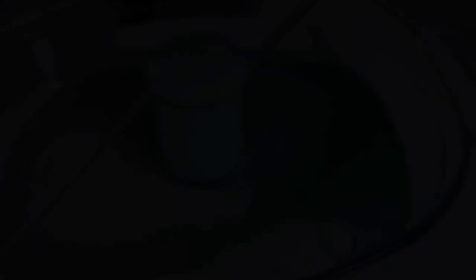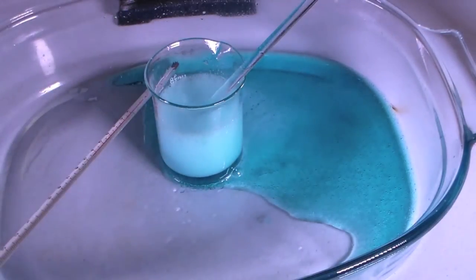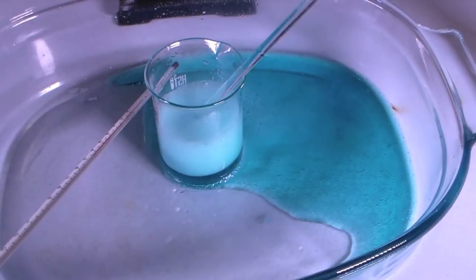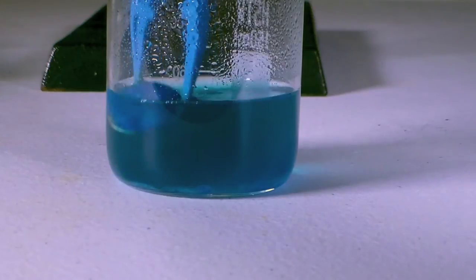If the mixture gets too hot, stop addition of the hydrogen peroxide and cool the solution with an ice bath before proceeding to add more peroxide. You can see that I left the mixture in the ice bath a bit too long.